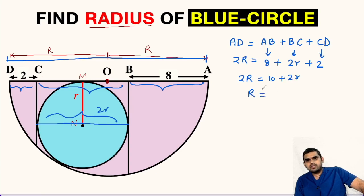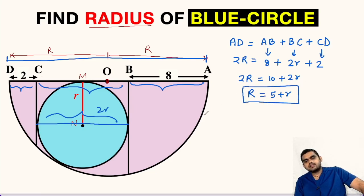We can divide the equation by 2, so capital R becomes 5 plus small r. This is the relationship between capital R and small r. Now let me clean the diagram.